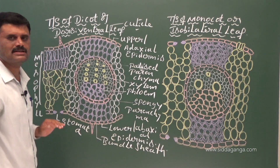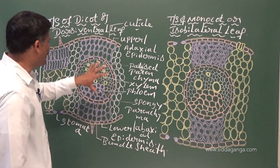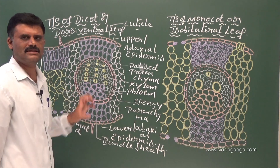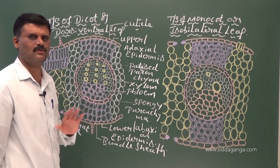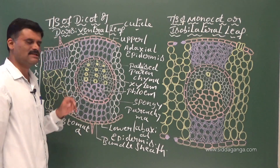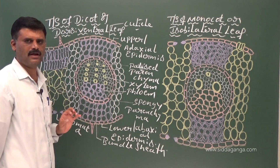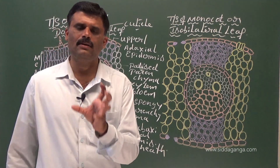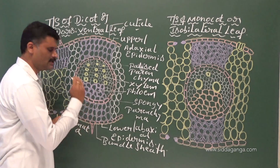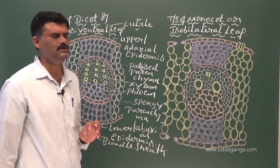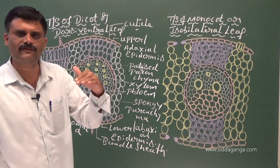In dicot leaf, the chlorenchymatous mesophyll region is differentiated into palisade parenchyma and spongy parenchyma. Palisade parenchyma is present towards the adaxial surface; spongy parenchyma is present towards the abaxial surface. Vascular bundles are present in the veins, midrib, and veinlet regions. The vascular bundles are conjoint, collateral, and closed. Xylem is present towards the upper surface.